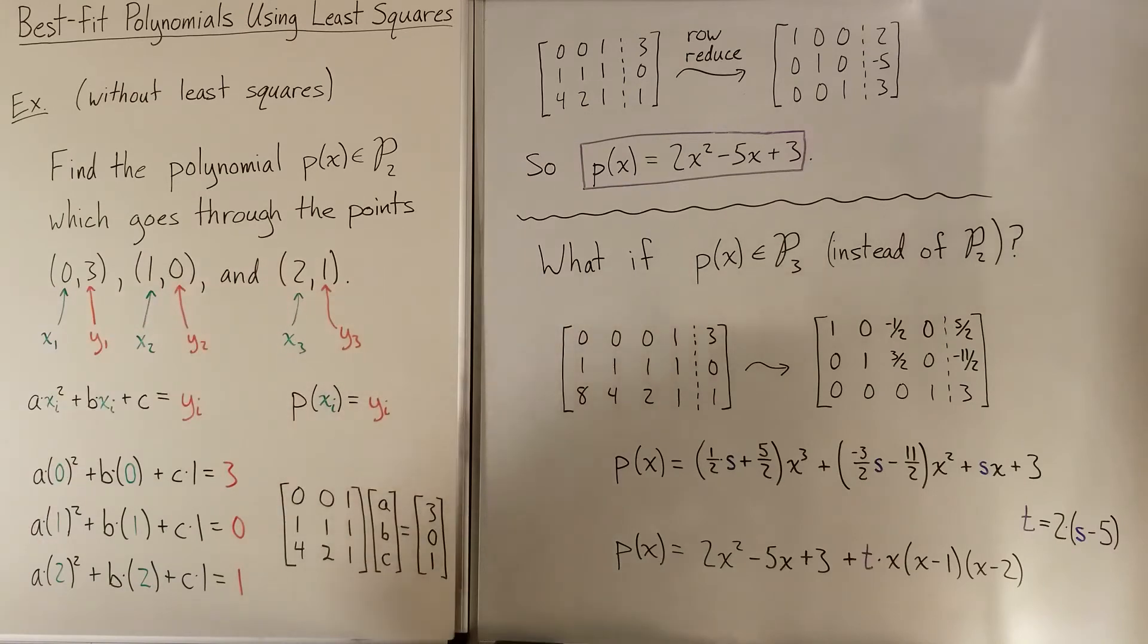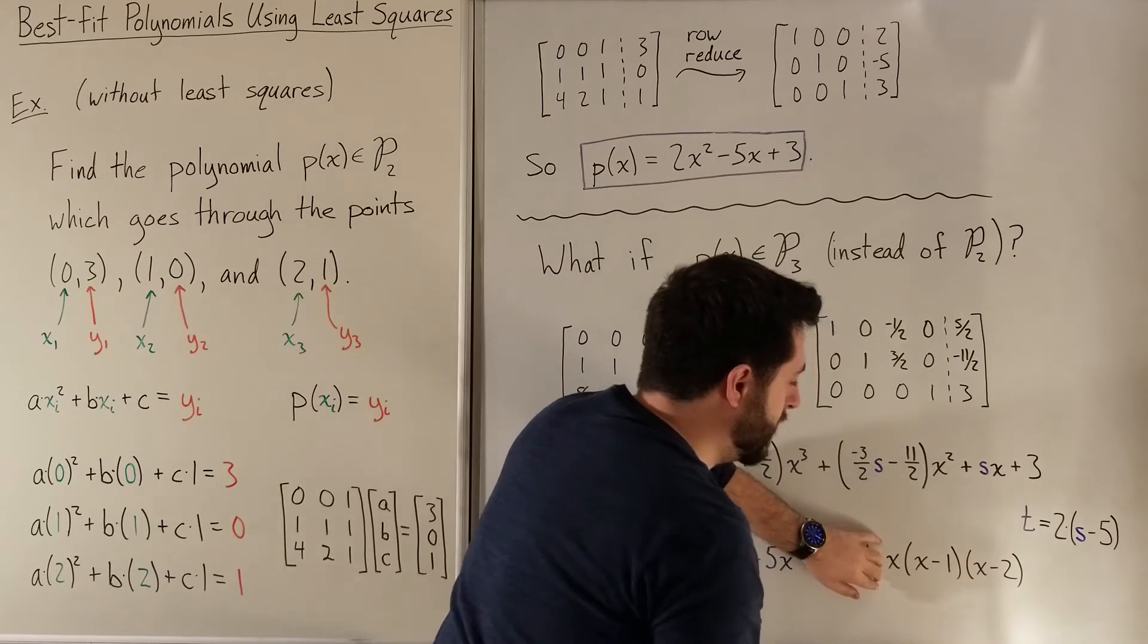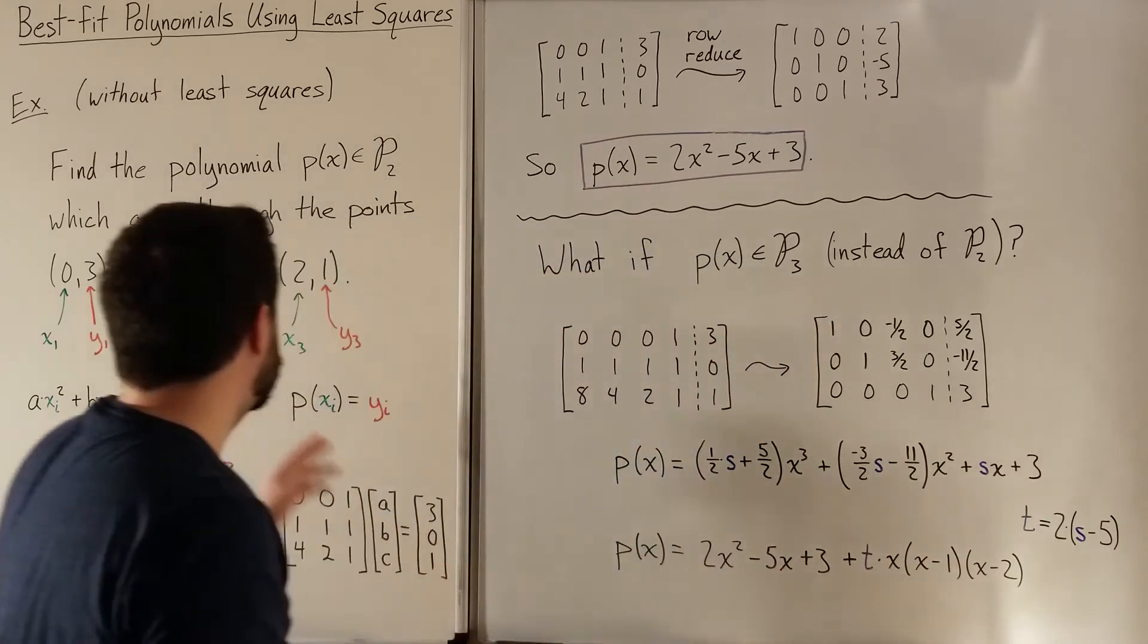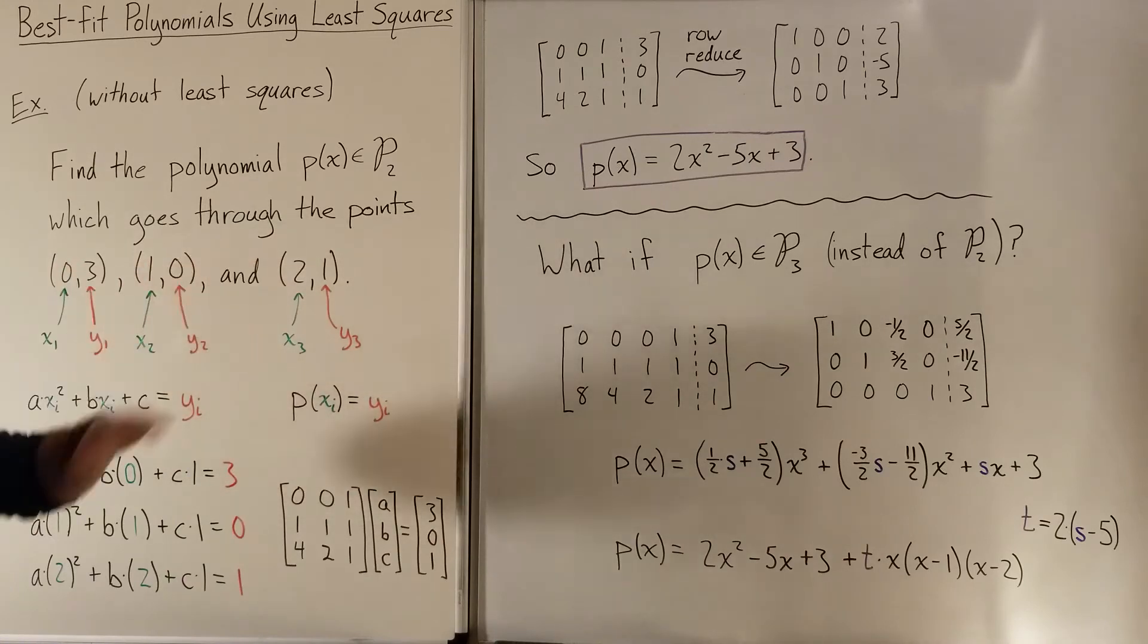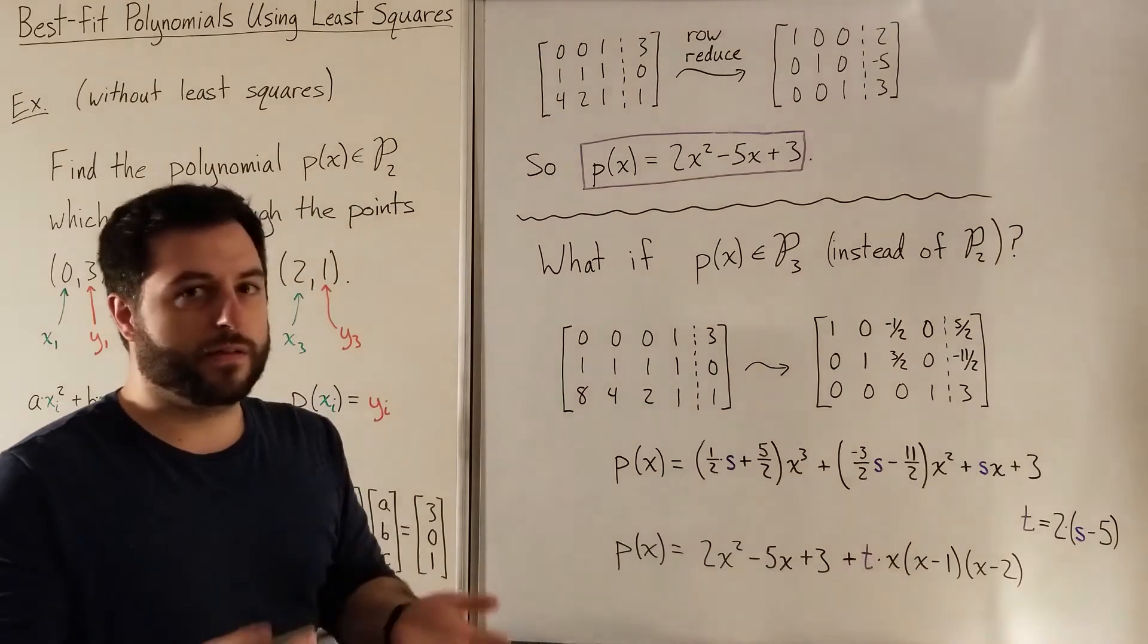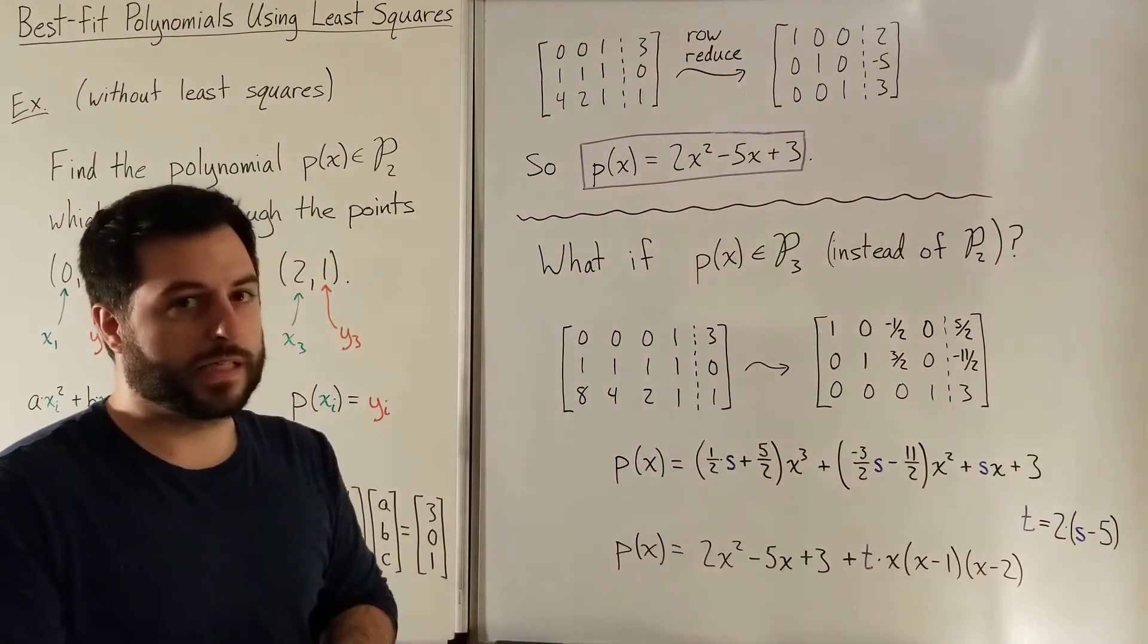into just this part right here, you're always going to get zero. And so we took something where it already satisfied that the y values were correct, and now we're adding on something that won't change the y values at those three points because it's always going to be adding zero for those specific x values.